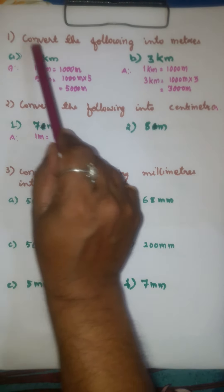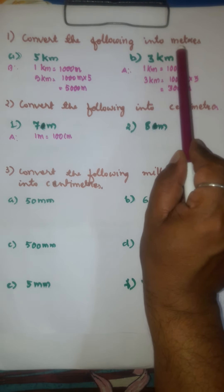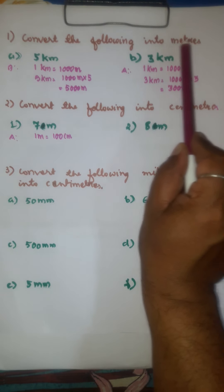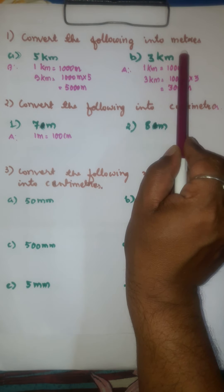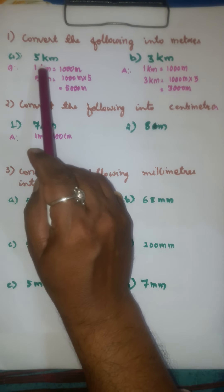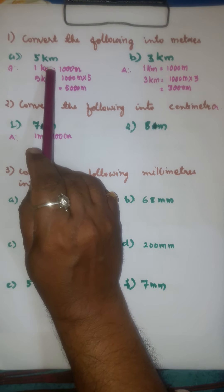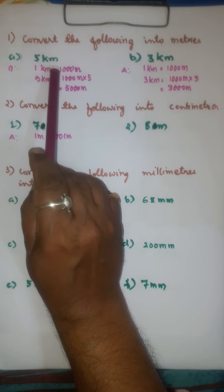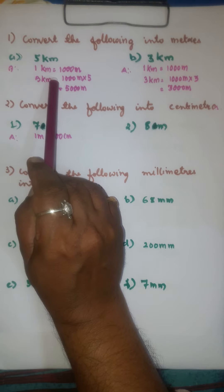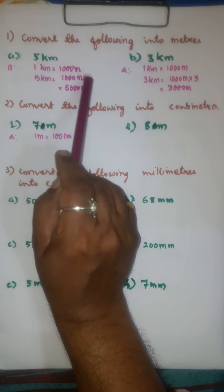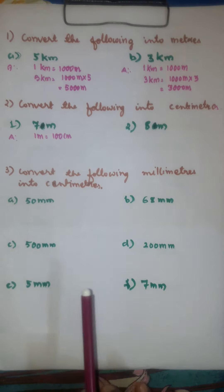Dear students, we shall learn the conversion of the units of length. Here we have to convert kilometers into meters. First we have 5 kilometers. 1 kilometer is equal to 1000 meters. Therefore, 5 kilometers is equal to 1000 meters into 5. That is equal to 5000 meters.